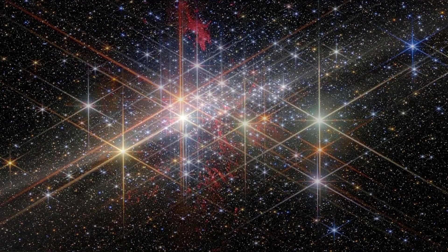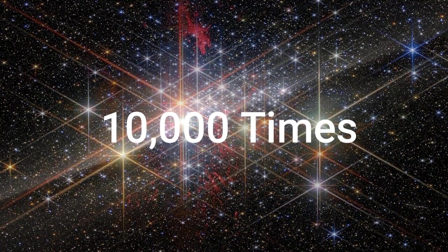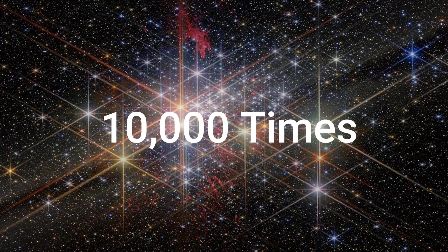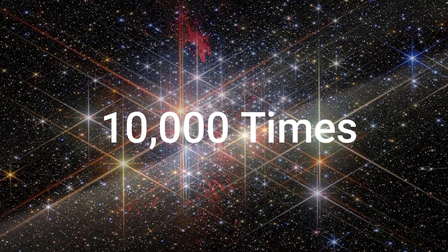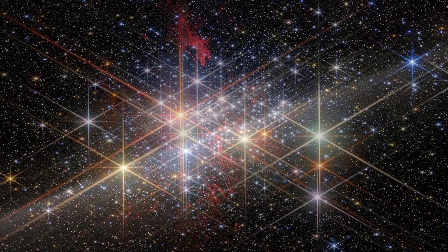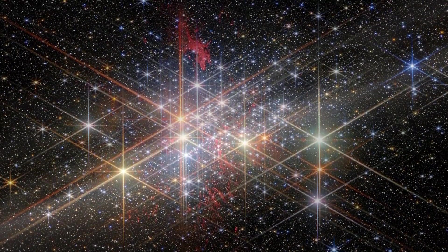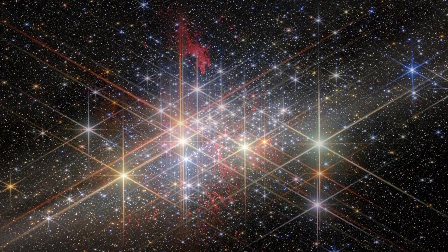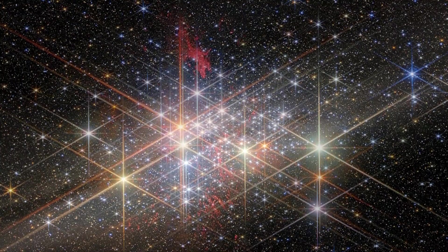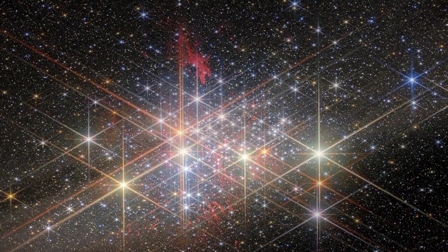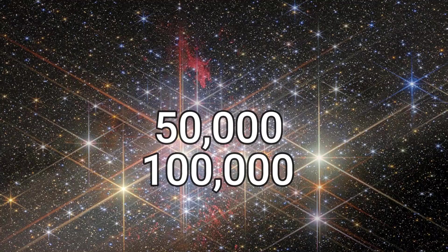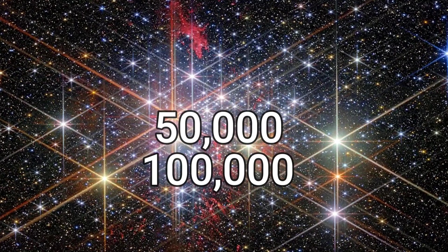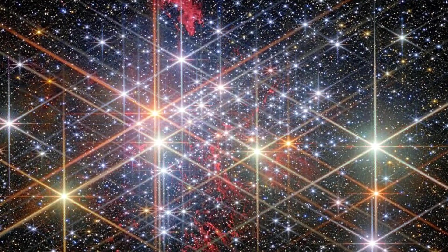Super star clusters like Westerlund 1 contain over 10,000 times the mass of our Sun packed into a small volume of space, creating an environment where star formation occurs at an accelerated pace. Westerlund 1 stands out as the most massive cluster yet observed, with estimates suggesting it harbors between 50,000 to 100,000 times the Sun's mass within a region less than six light-years across.